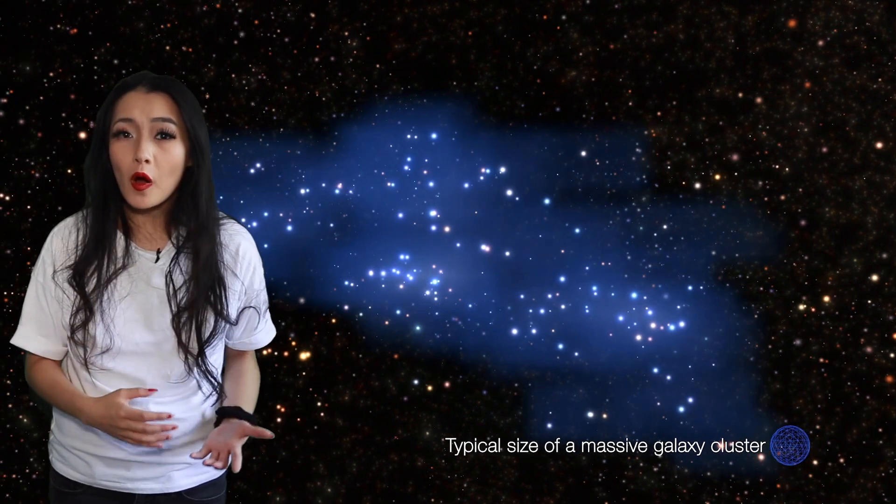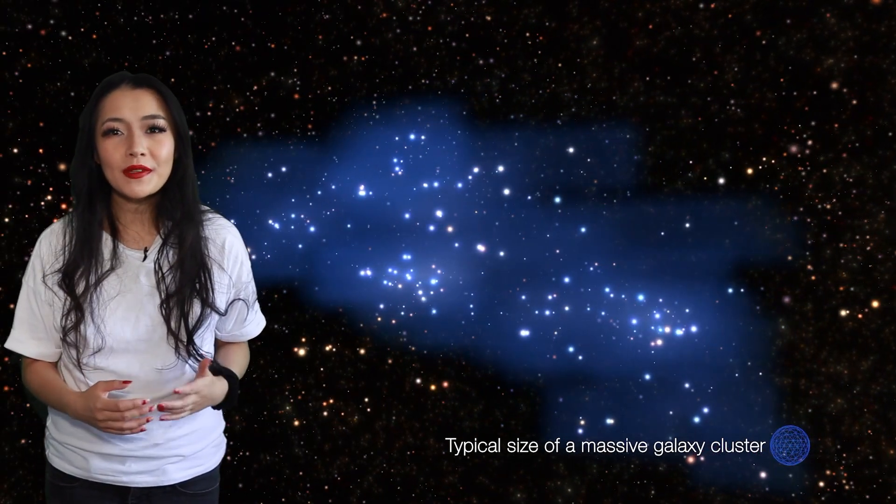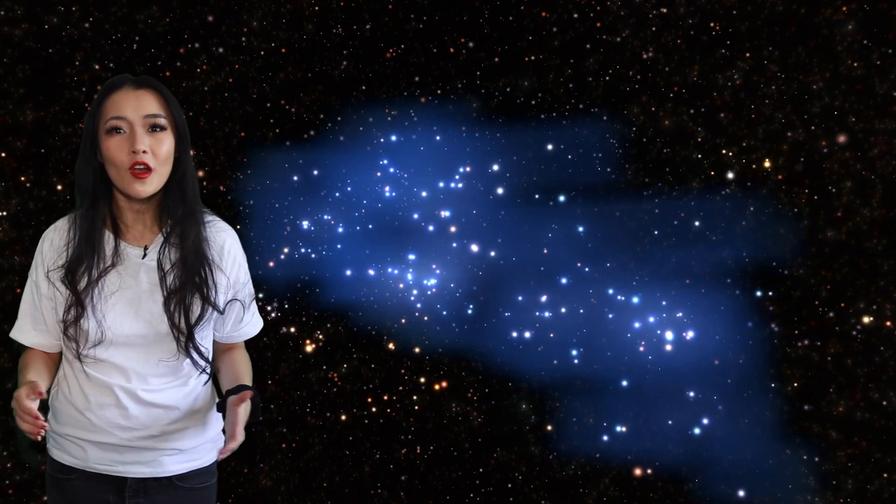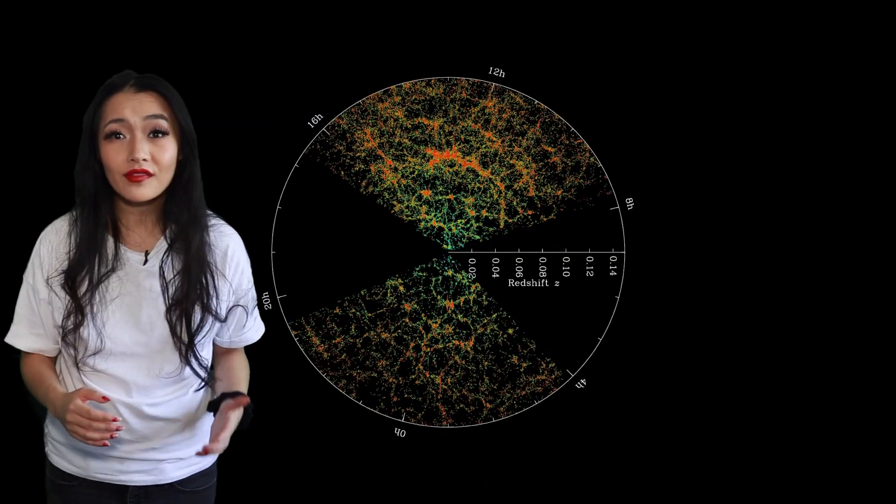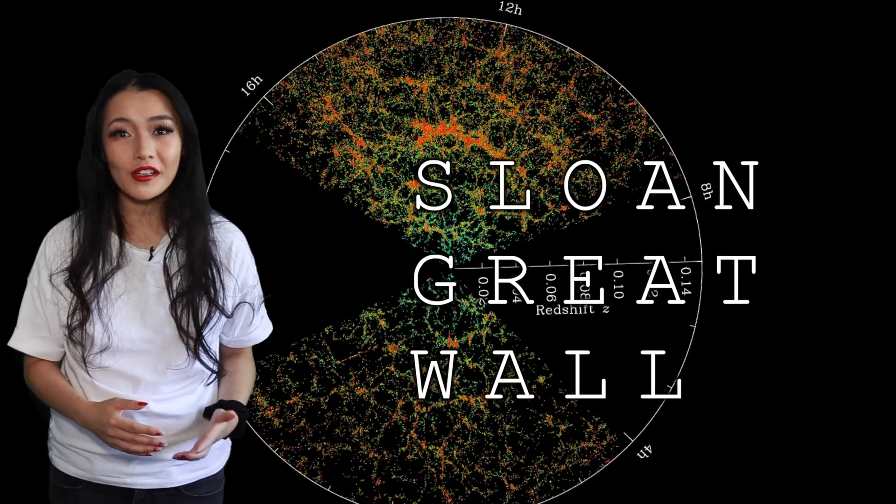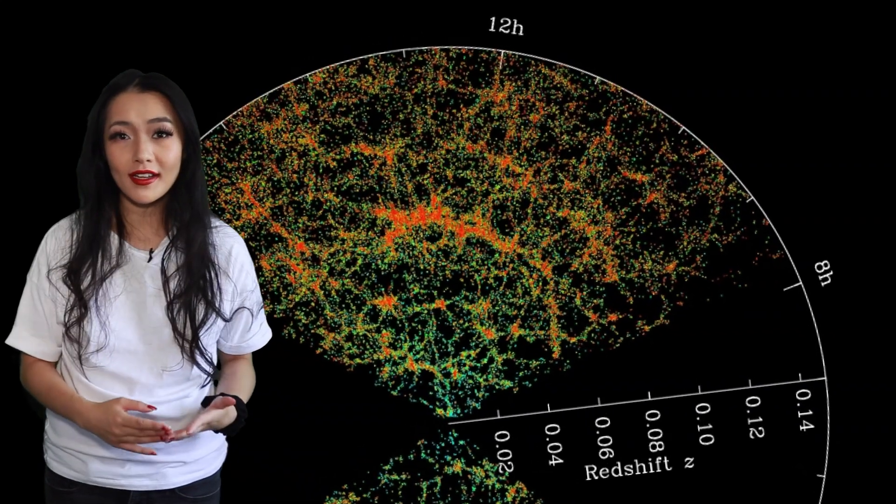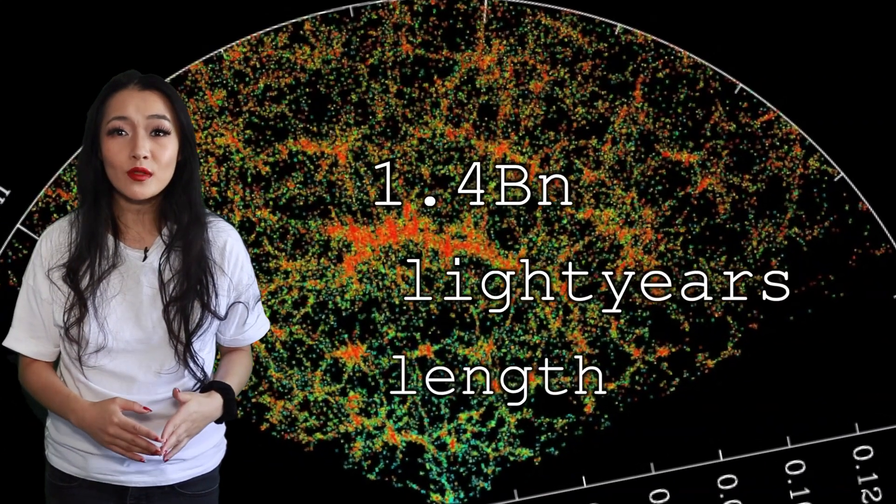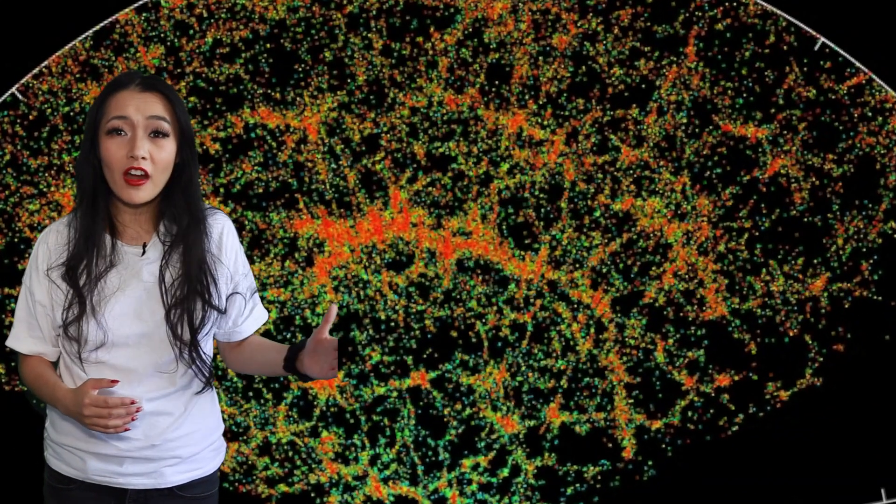The South Pole Wall hasn't been fully mapped out yet but astronomers believe it to be at least 420 megaparsecs in size or 1.4 billion light-years. This makes it comparable to the sixth largest structure in our universe, the Sloan Great Wall that was discovered in 2003 in the Sloan Digital Sky Survey. The Sloan Great Wall similarly is 1.4 billion light-years across but is twice as far away from us.